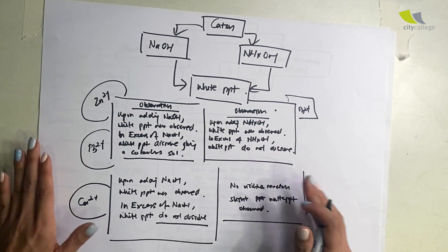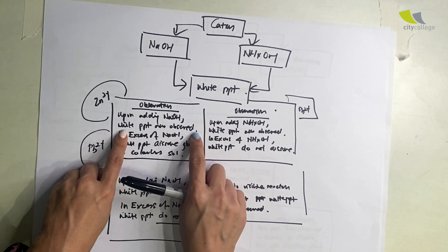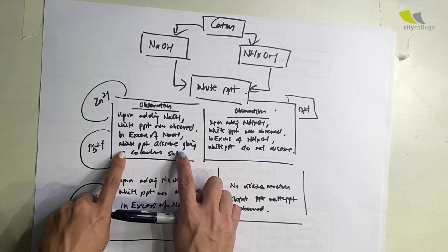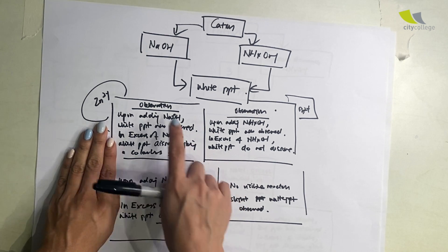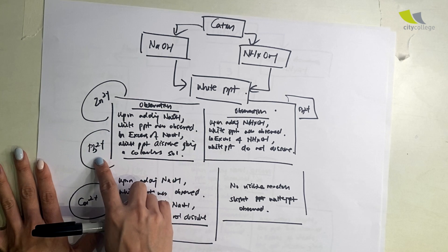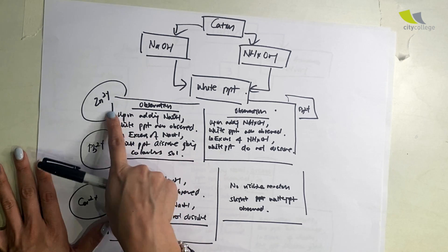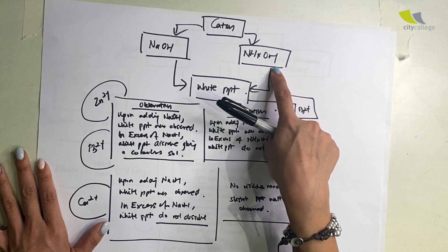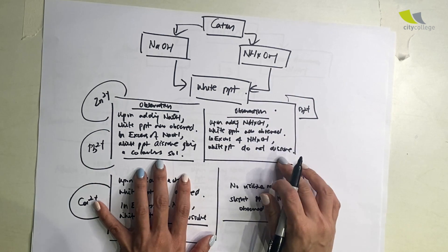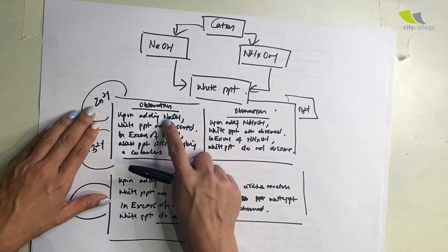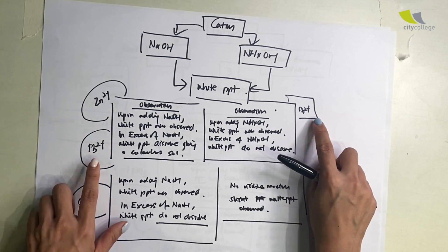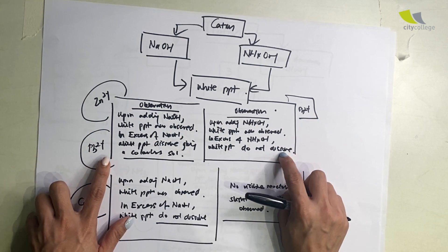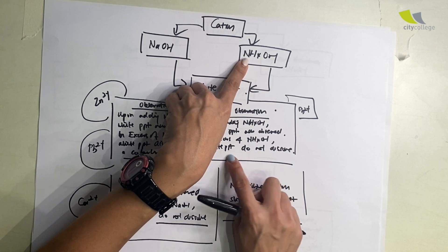For the white one, when you add NaOH, white ppt observed. In excess, they dissolve, giving a colorless solution. That will give you Zn2+ and Pb2+. And how do you differentiate these two? When you use NH4OH. With NH4OH, only Zn2+ will dissolve, giving a colorless solution, where Pb2+ under NH4OH do not dissolve.